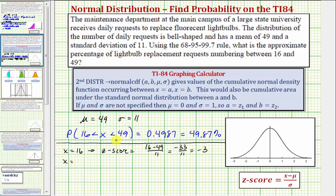And then we should recognize for x equals forty-nine, the z-score would be zero, because forty-nine is the mean. But we'll go ahead and show it. We'd have forty-nine minus forty-nine divided by eleven, which equals zero. So another way to express the same percentage or probability would be to say the probability that the z-score is greater than negative three and less than zero.